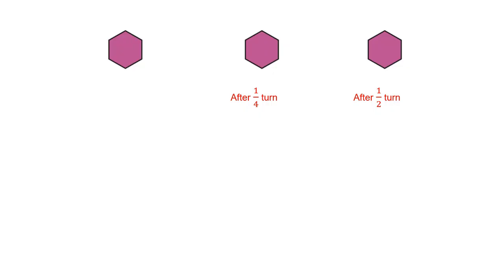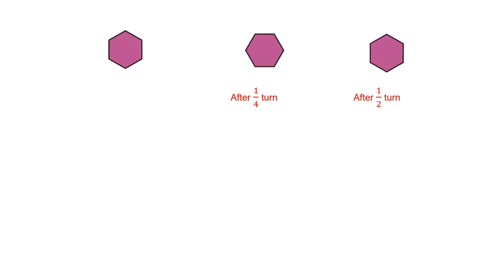Now the hexagon. How does it look after one-fourth turn? Comparing these two hexagons — they do not look the same. Now let us check after half turn. Yes, this hexagon looks the same after half turn.